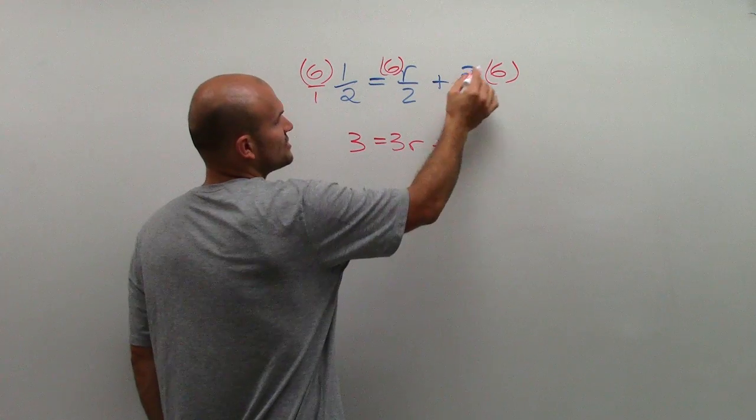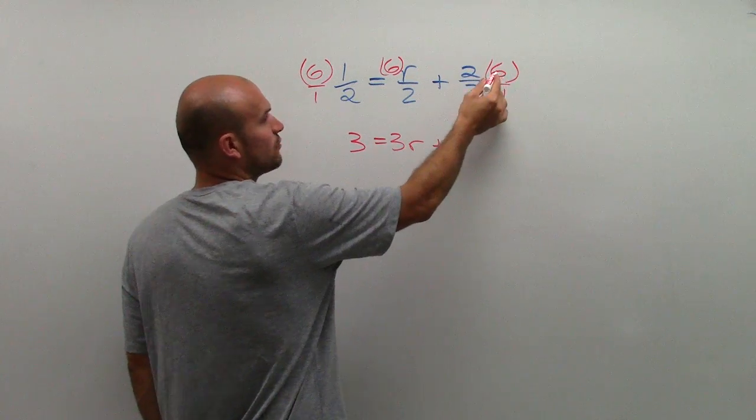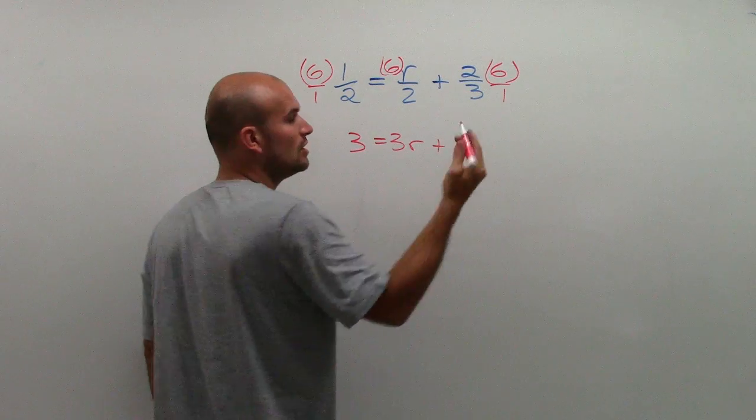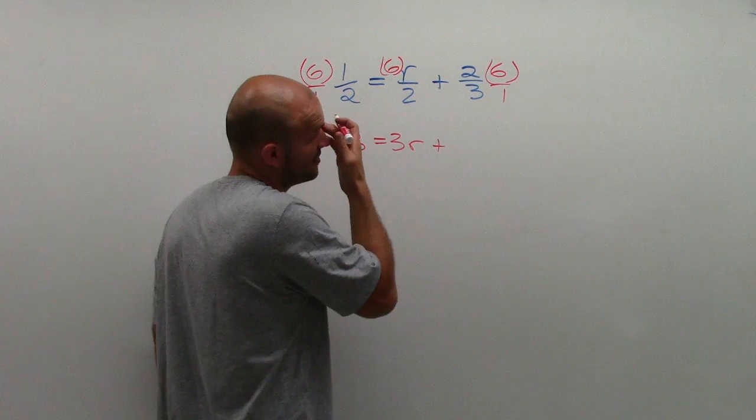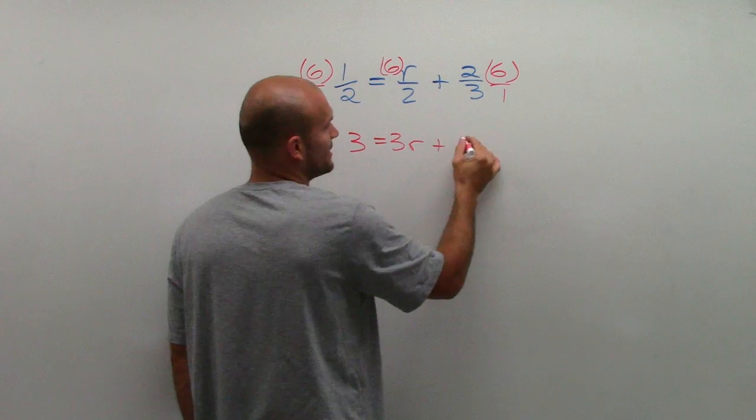and then plus six times two is twelve. Three times one is four. Twelve divided by four is, I'm sorry, twelve divided by three is four.